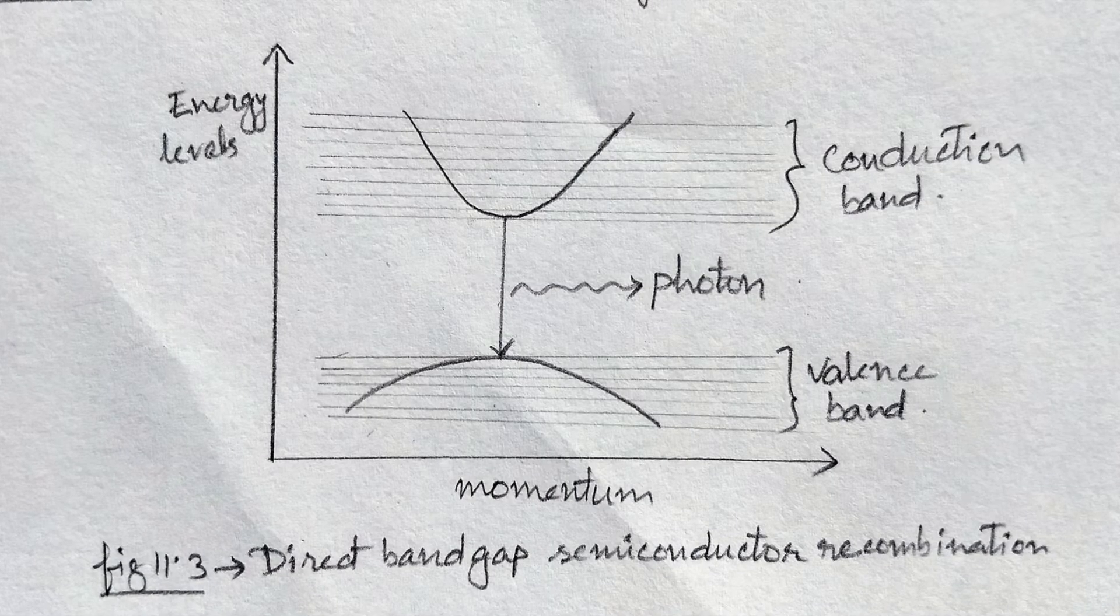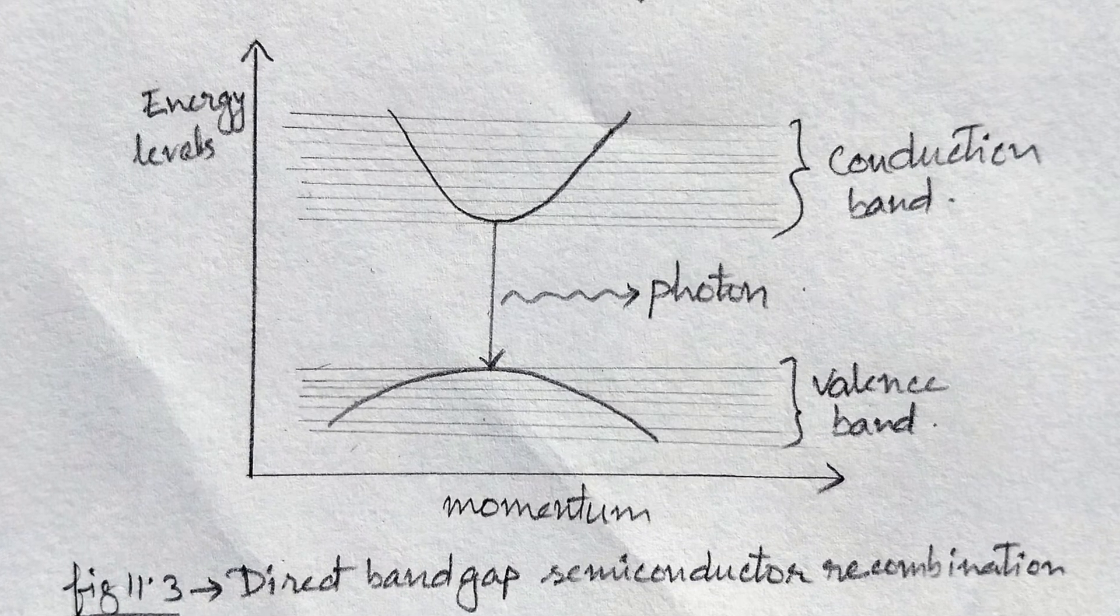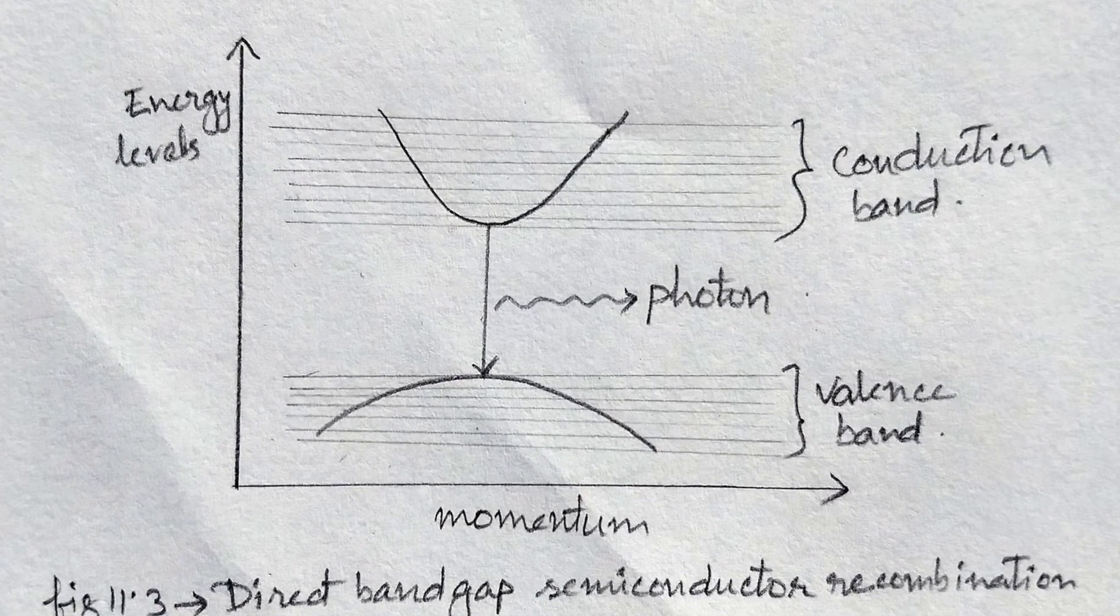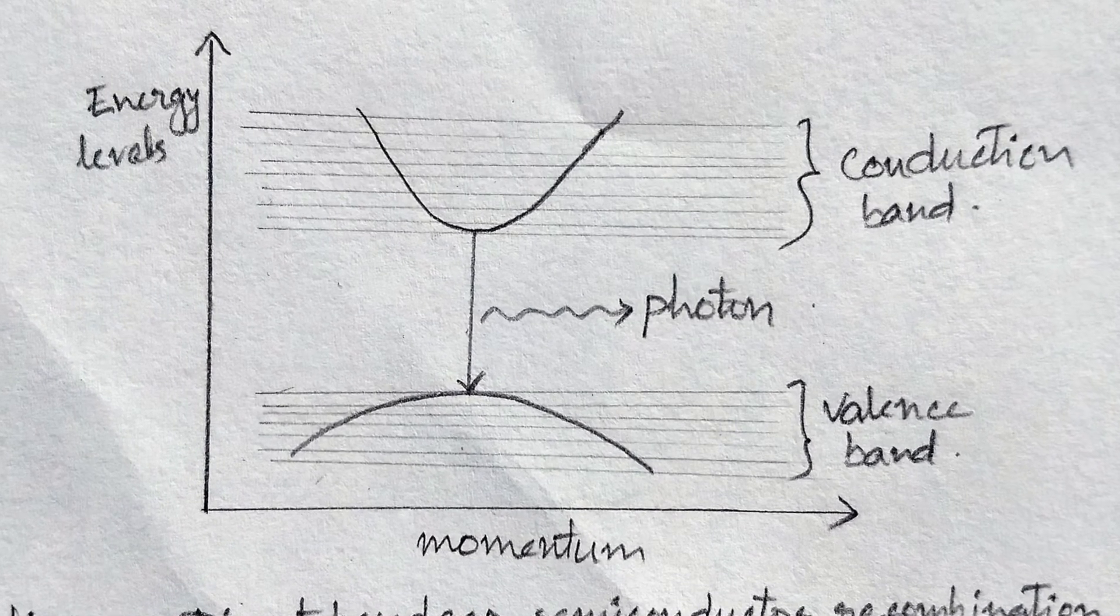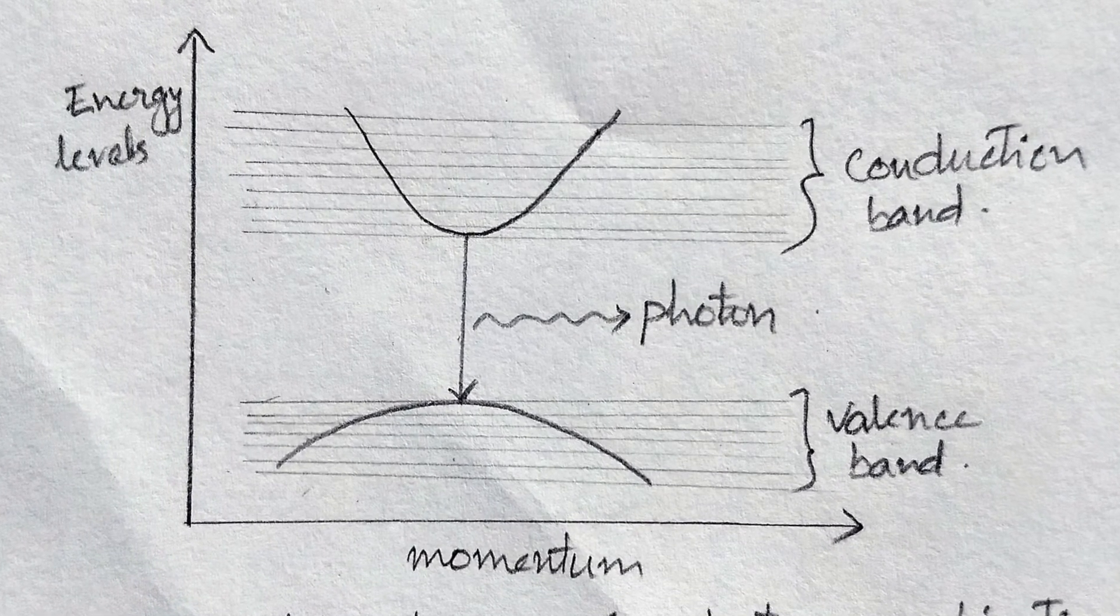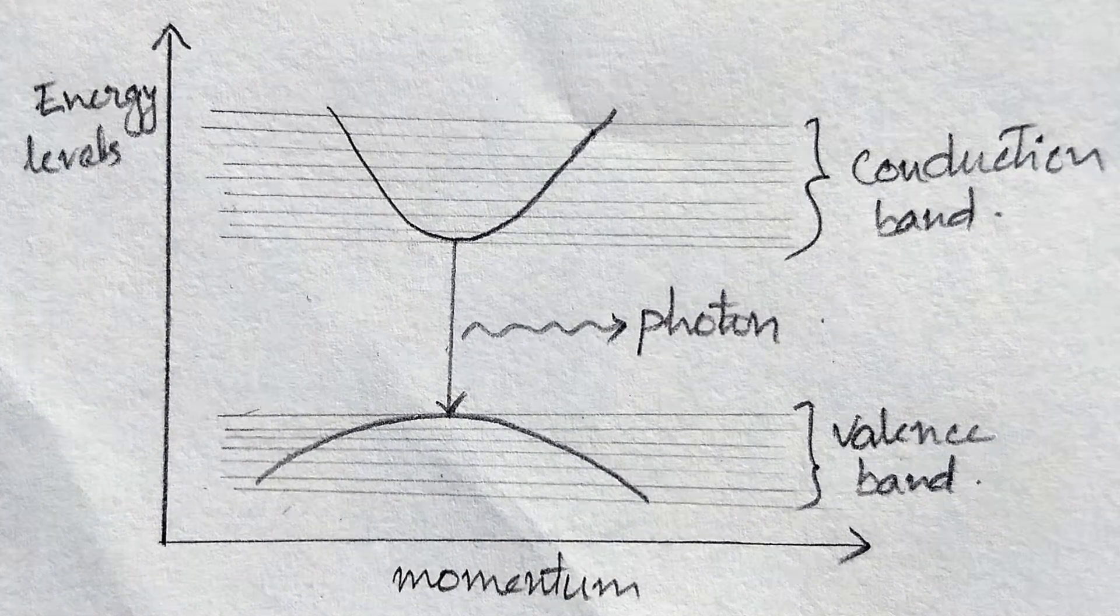In some other materials such as gallium arsenide phosphide and gallium phosphide, the number of photons of light energy emitted is sufficient to create visible light. The process of giving off light by applying an electrical source of energy is called electroluminescence.